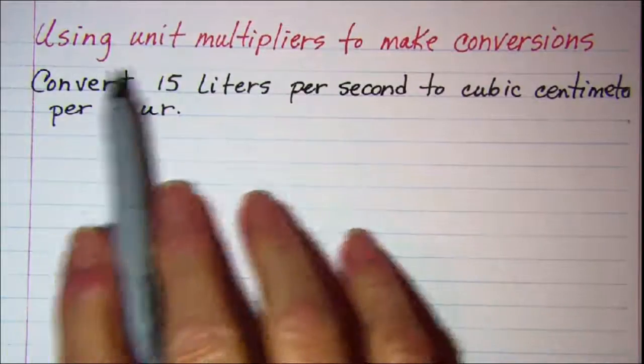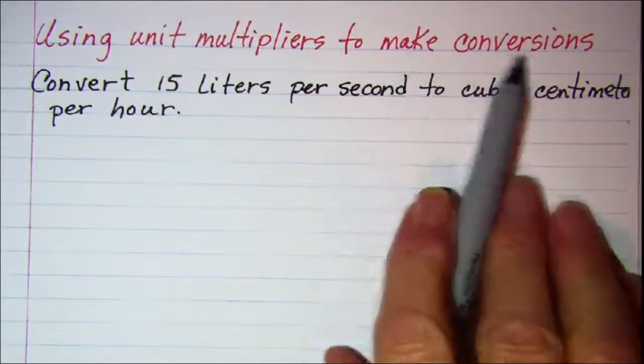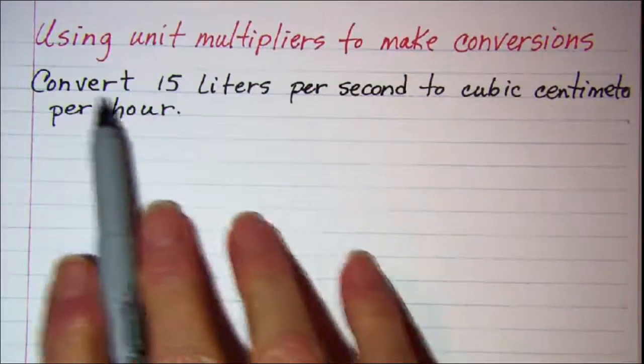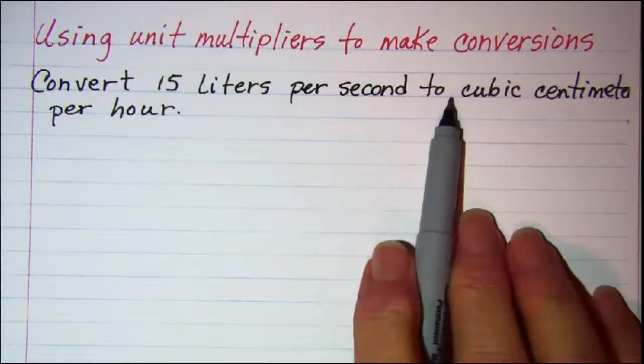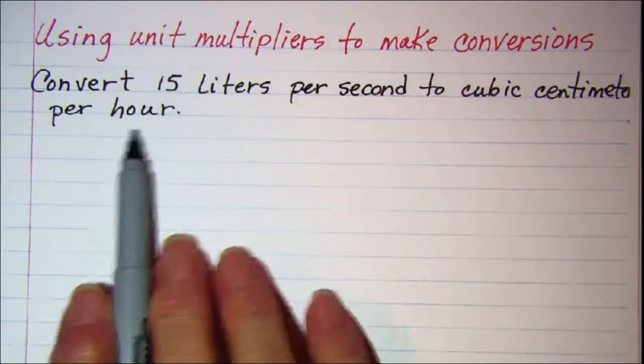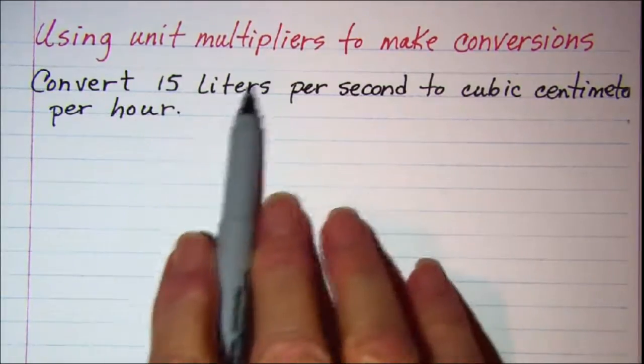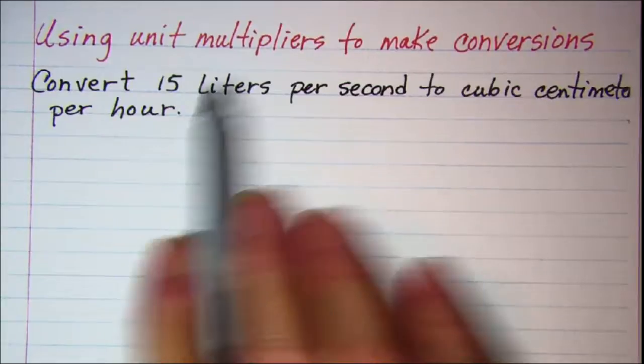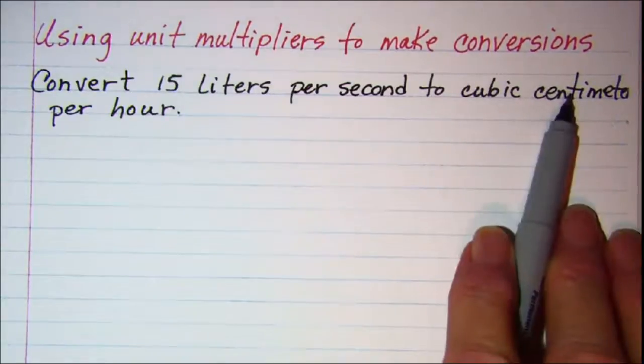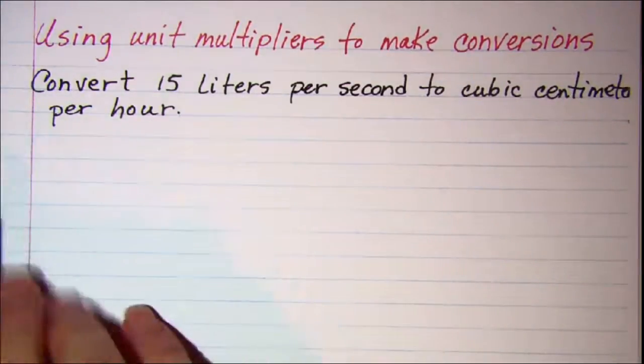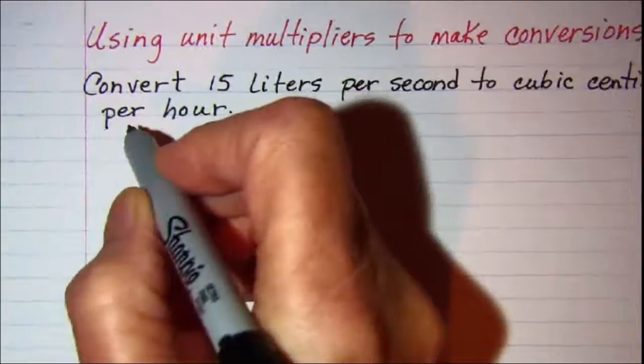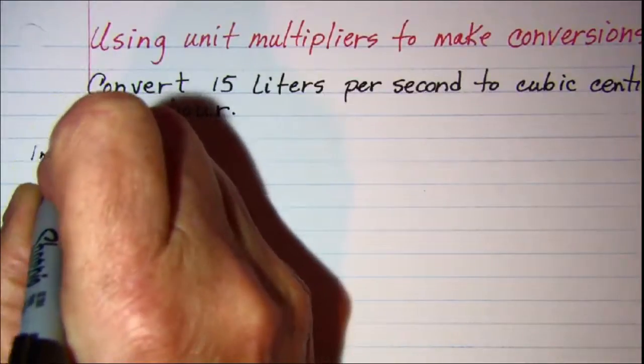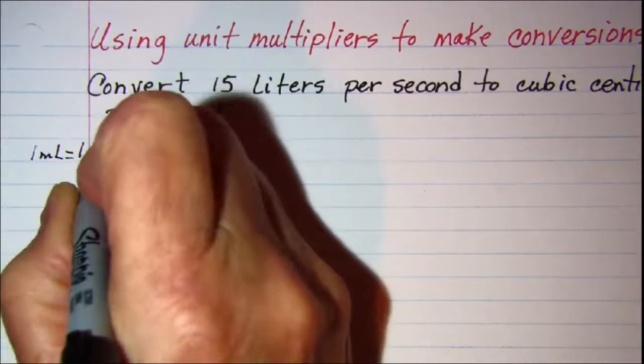In this video we'll be using unit multipliers to make conversions. Our first example is to convert 15 liters per second to cubic centimeters per hour. This volume measurement conversion requires metric to English volume equivalents, so we will be using 1 milliliter equals 1 cubic centimeter.